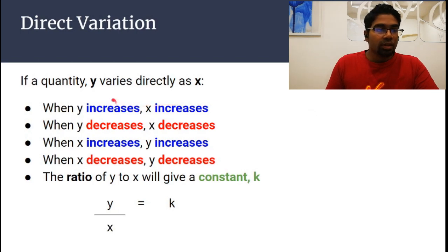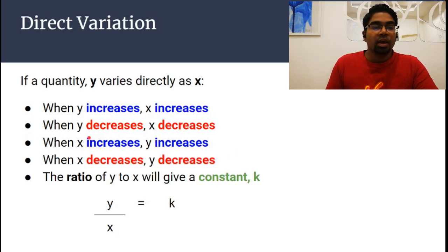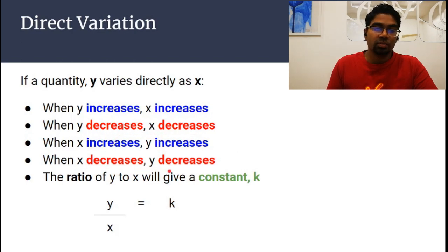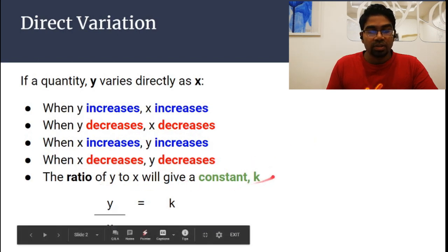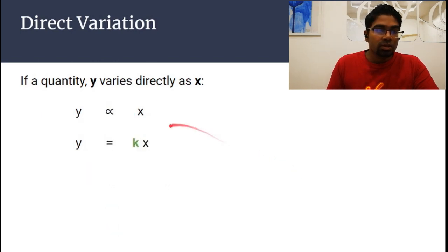In direct variation, if a quantity y varies directly as x, when y increases x will increase, and when x increases y will also increase. When y decreases x decreases, and when x decreases y will decrease. The ratio of y to x gives us a constant k — this is the definition of direct variation.